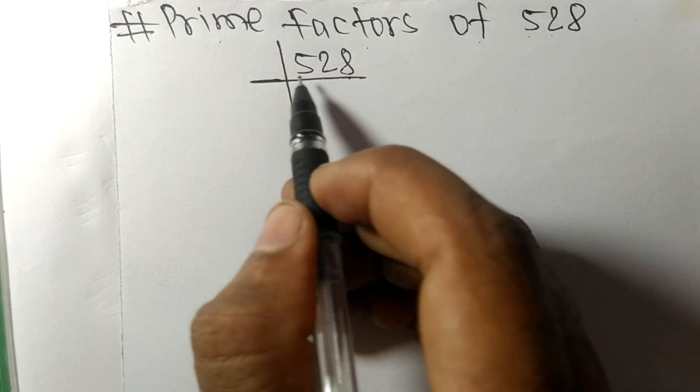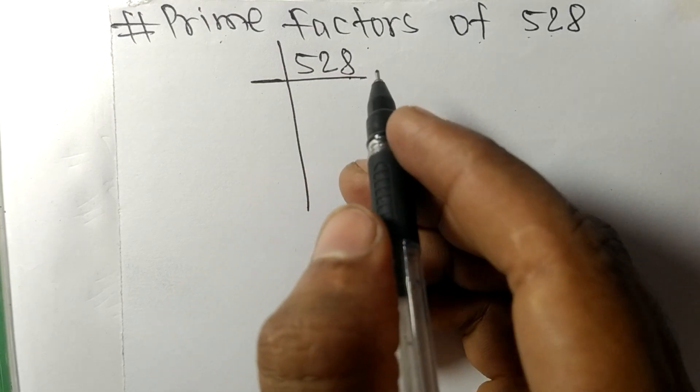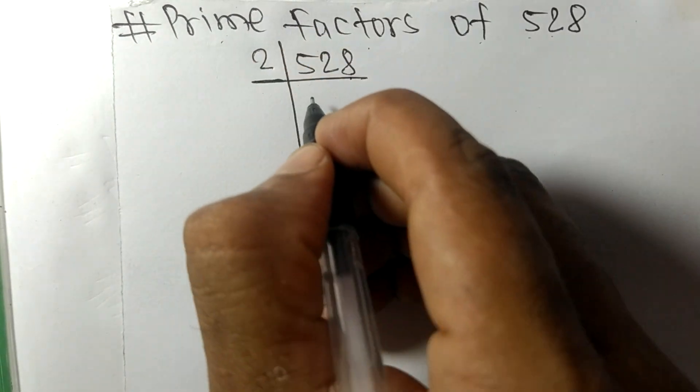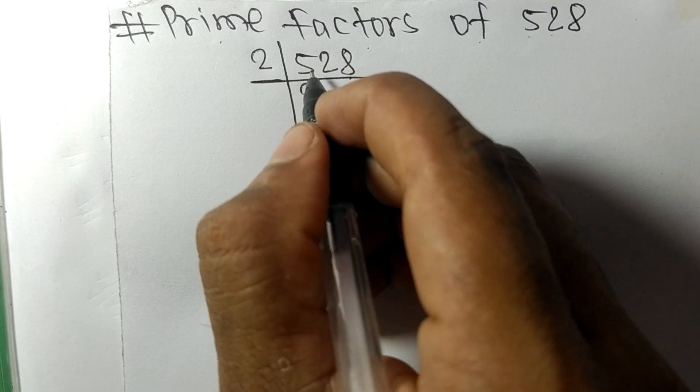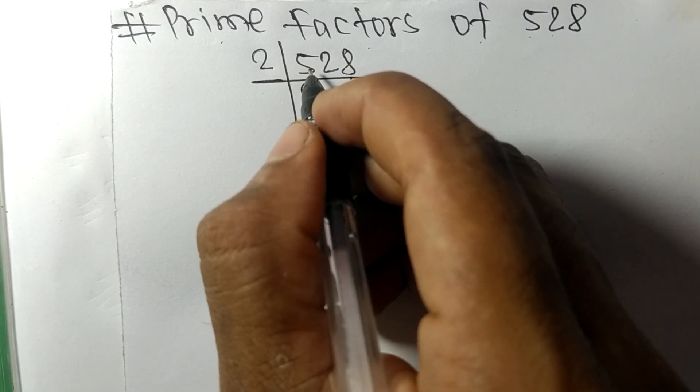So this whole number is divisible by 2. 2 times 2 is 4, remainder 1. Bring down 1 to make 12. 2 times 6 is 12, and 2 times 4 is 8. We get 264, which again has an even number 4 at last.